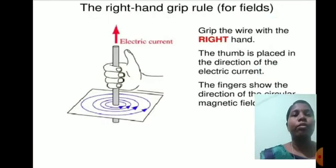Then, the right-hand grip rule for fields: Grip the wire with the right hand. The thumb is placed in the direction of the electric current. The fingers show the direction of the circular magnetic field.